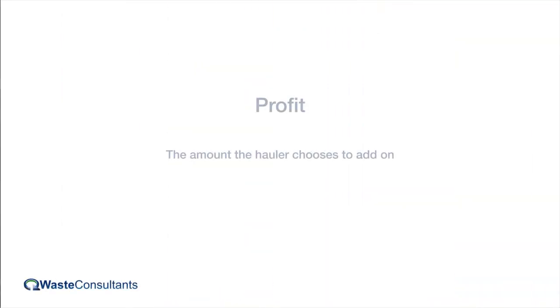The last component is profit — the amount the hauler adds on top of the four other costs. This is typically the number we work with to identify ways to reduce your cost. As experts in the waste industry, knowing these five components allows us to verify that you're only paying what you need to be paying.